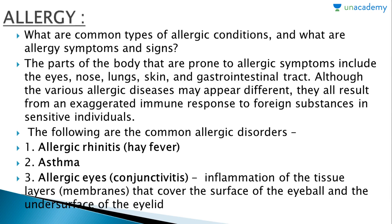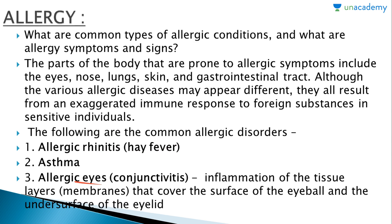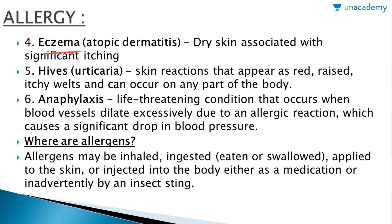The parts of the body prone to allergic symptoms include the eyes, nose, lungs, skin, and gastrointestinal tract. All allergic diseases result from an exaggerated immune response to foreign substances in sensitized individuals. Common allergic disorders include: allergic rhinitis, also called hay fever; asthma; allergic conjunctivitis, which is inflammation of the membranes covering the surface of the eyeball and the undersurface of the eyelid; and eczema, also called atopic dermatitis.